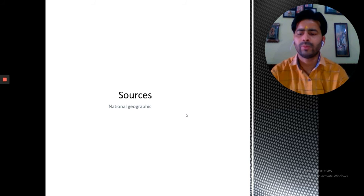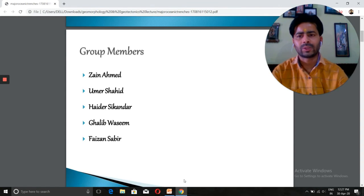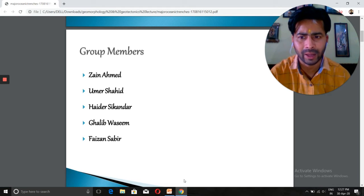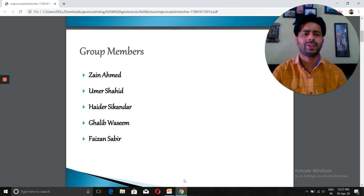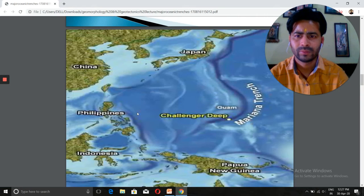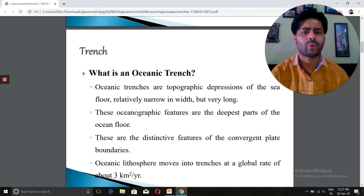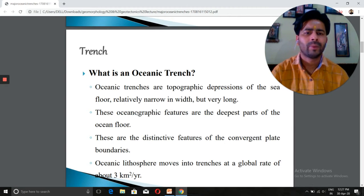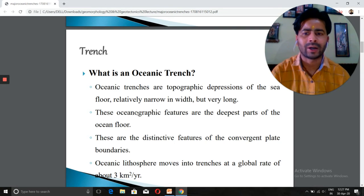What is an oceanic trench? An oceanic trench is a topographic depression of the sea floor, relatively narrow in width but very long. These oceanographic features are the deepest part of the ocean floor. These are distinctive features of convergent plate boundaries.